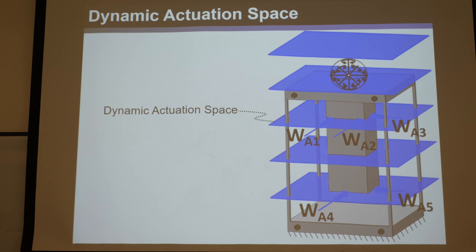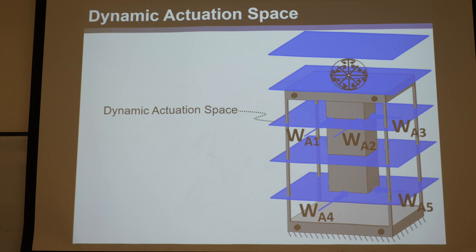It turns out most people think: this system achieves three degrees of freedom, so of course you need three actuators. And that's right if you're quasi-statically loading it. But who would have thought — if you're dynamically loading it, you actually need five? That's just weird. Dynamic actuation space is already very useful because if you actually want to drive something at an appreciable speed, it may surprise you to find you need more actuators than you have degrees of freedom.